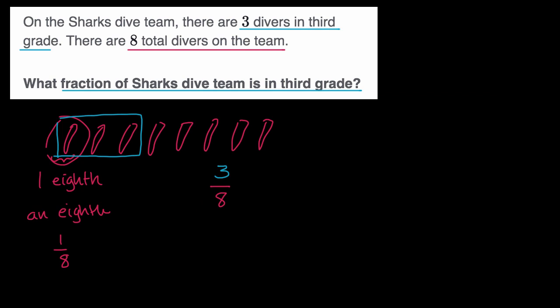Or you could represent it as, if you wanted to write it out as a word, three, instead of having it three over eight, you could write three-eighths like that. If you're doing this on Khan Academy, there would be some choices out there where you'd pick the correct choice. But you could represent the fraction of shark's dive team that is in third grade either as three over eight, three-eighths, or three and then spell out the word eighths.